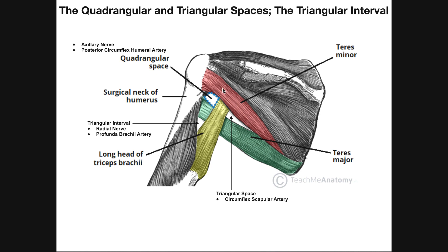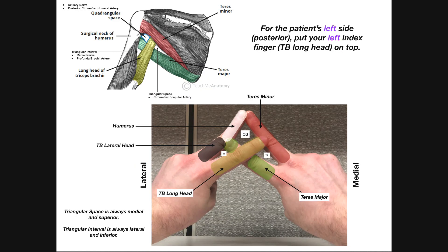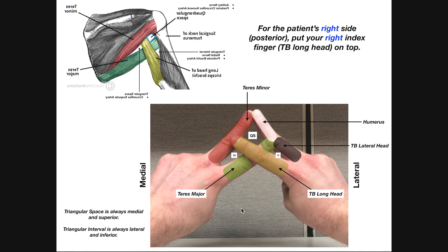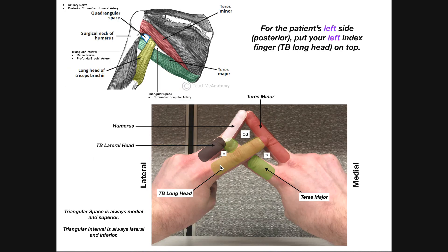Now you could memorize this and spit it out on the exam, but wouldn't it be nice if there were a systematic way to learn these boundaries? It turns out there is. I went ahead and took this picture and colored it according to the previous slide. When you're doing this, you're going to assume you're looking at a posterior view. It'll still work for an anterior view, but we're starting with posterior view in this video. We're going to start by looking at the patient's left side. You position your fingers so your middle fingers meet up, and then for your index fingers — if you're looking at the patient's left side, your left index finger goes on top. And you create here a quadrangular space.